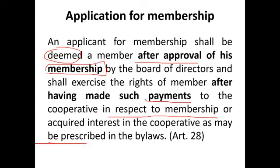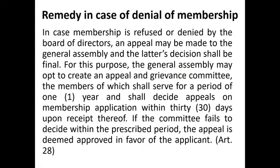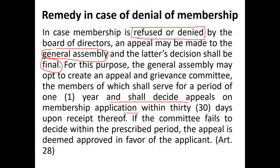In case membership is refused or denied by the board of directors, you may appeal to the general assembly, and the decision of the general assembly is of course final. For this purpose, the general assembly may create an appeal and grievance committee with a term of one year. The committee may decide on appeals on membership applications within 30 days upon receipt. If there is no action within 30 days, that is deemed approval of the appeal. If the appeal is denied by the committee, you may still appeal to the general assembly.